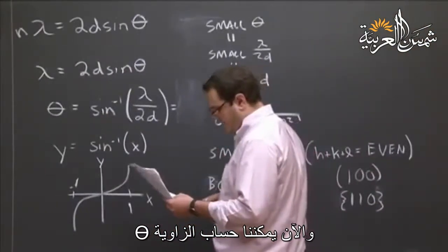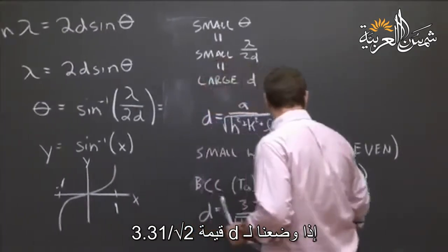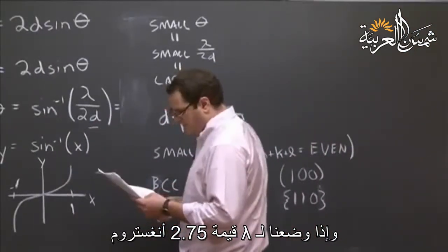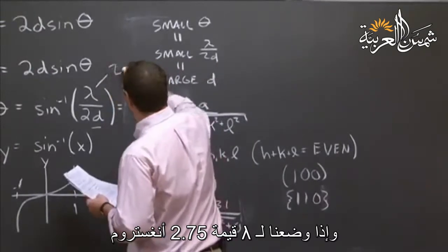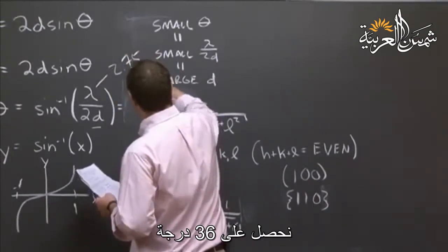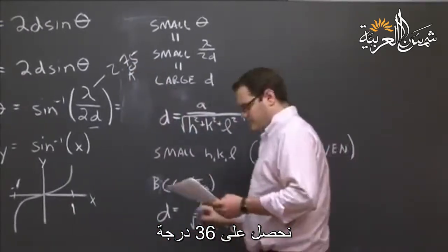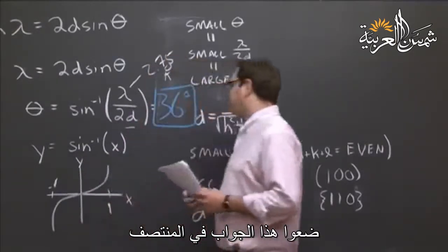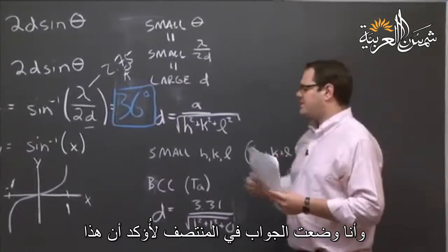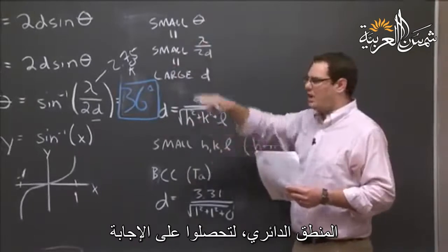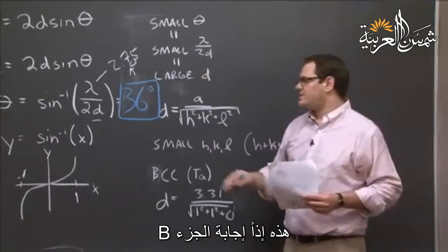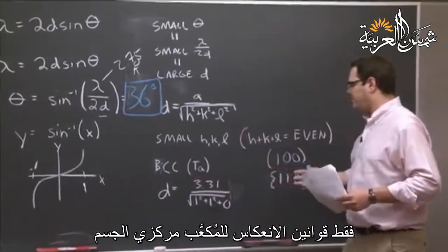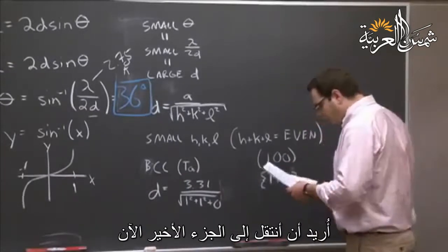With D = 3.31/√2 angstroms and lambda given as 2.75 angstroms, we get an answer of 36 degrees. That's the answer to part B. Remember, this is pretty much math and manipulation until the very end where we discuss the reflection rules for BCC.